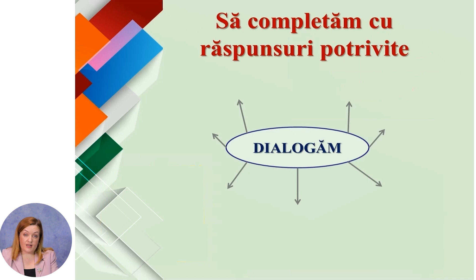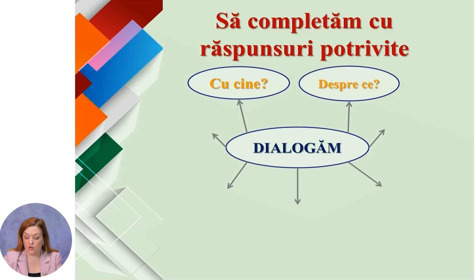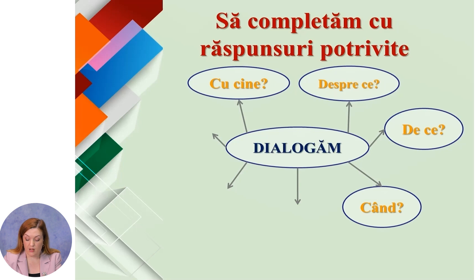Să generalizăm. Să completăm cu răspunsuri potrivite. Dialogăm cu cine? Cu prietenii, colegii, părinții, cu oamenii, în orice situație este necesar. Despre ce? Dialogăm despre subiecte de interes comun, despre anumite probleme sau soluții. De ce? Deoarece omul are nevoie permanentă de comunicare pentru a afla informații, pentru a acționa în diferite situații. Când dialogăm? Dialogăm când suntem față-în-față, dar sunt situații când dialogăm în scris, prin scrisori sau prin intermediul mijloacelor de comunicare.